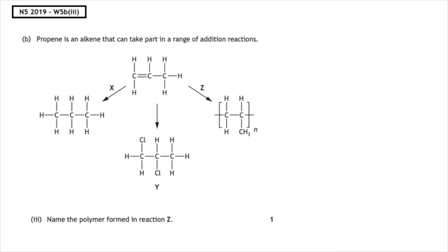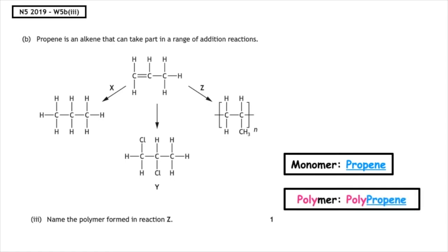This past paper question is from the National 5 2019 written 5B part 3. Propene is an alkene that can take part in a range of addition reactions. Name the polymer formed in reaction Z. Well, if the name of the monomer is propene, the name of the polymer must be polypropene.